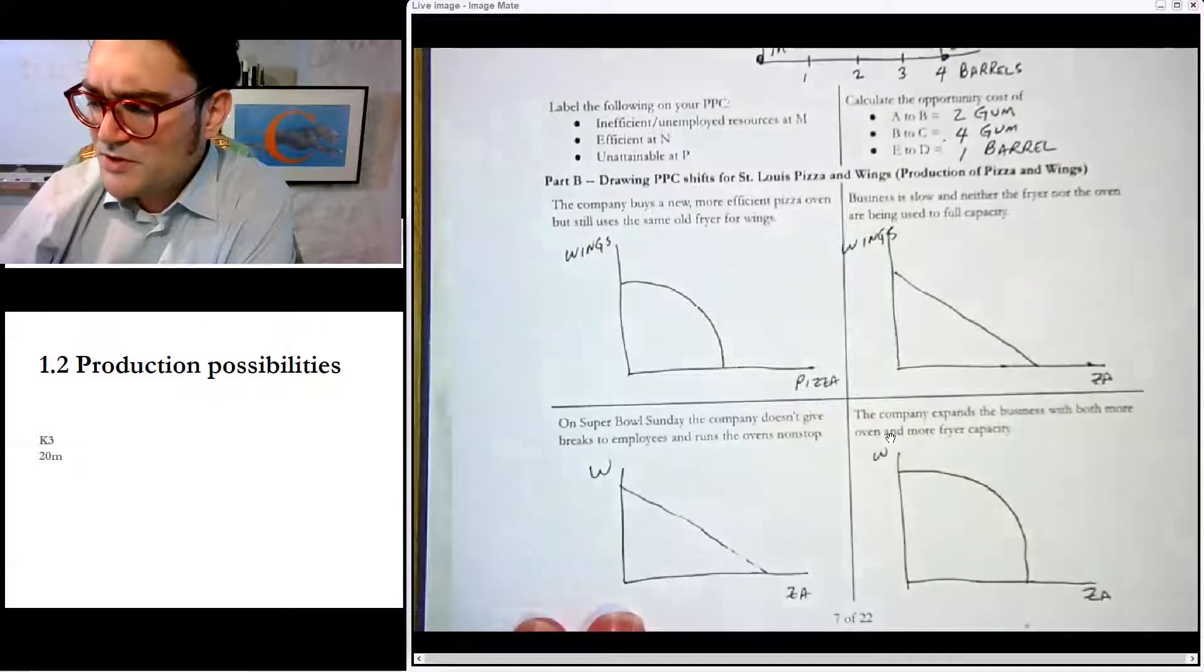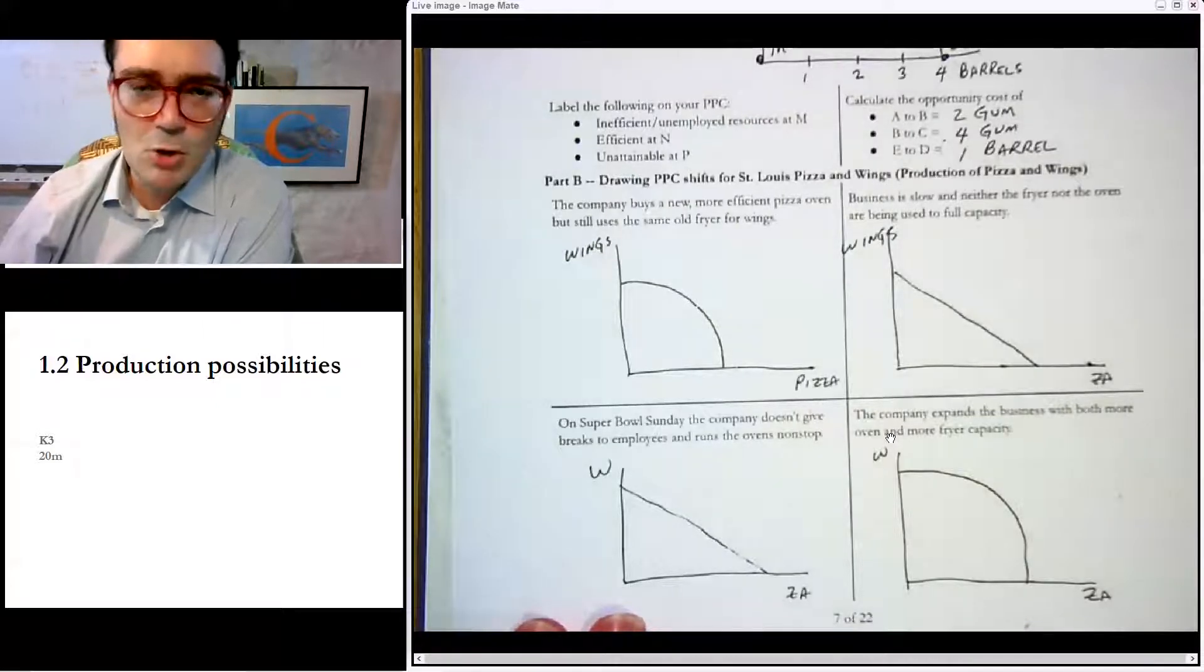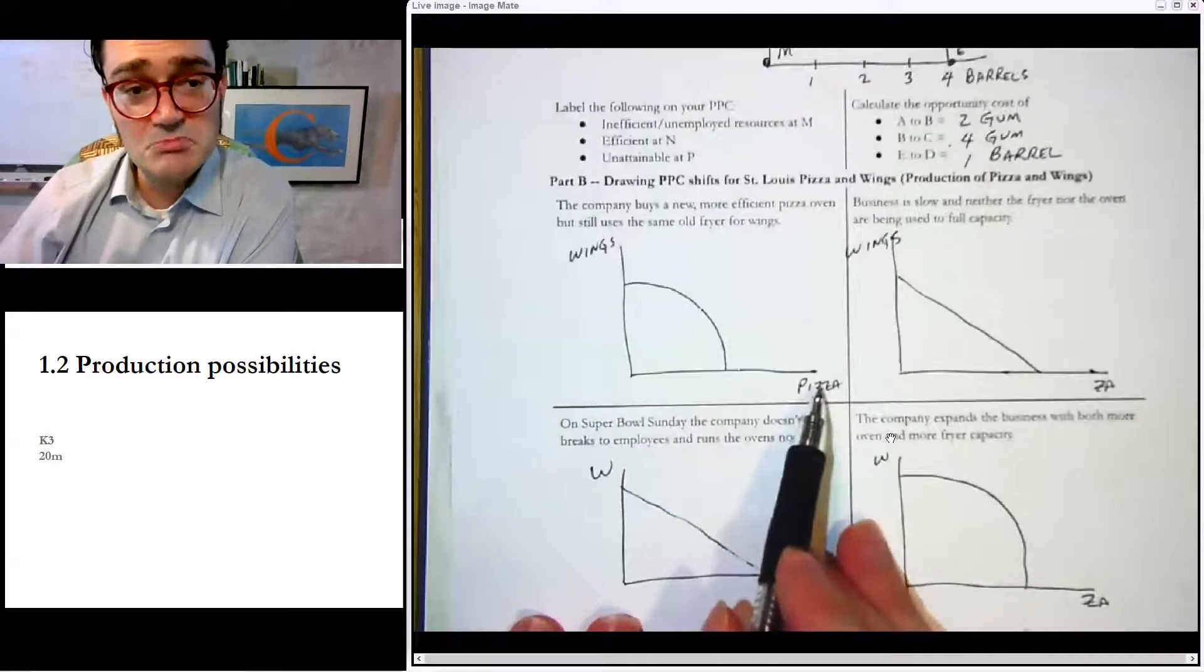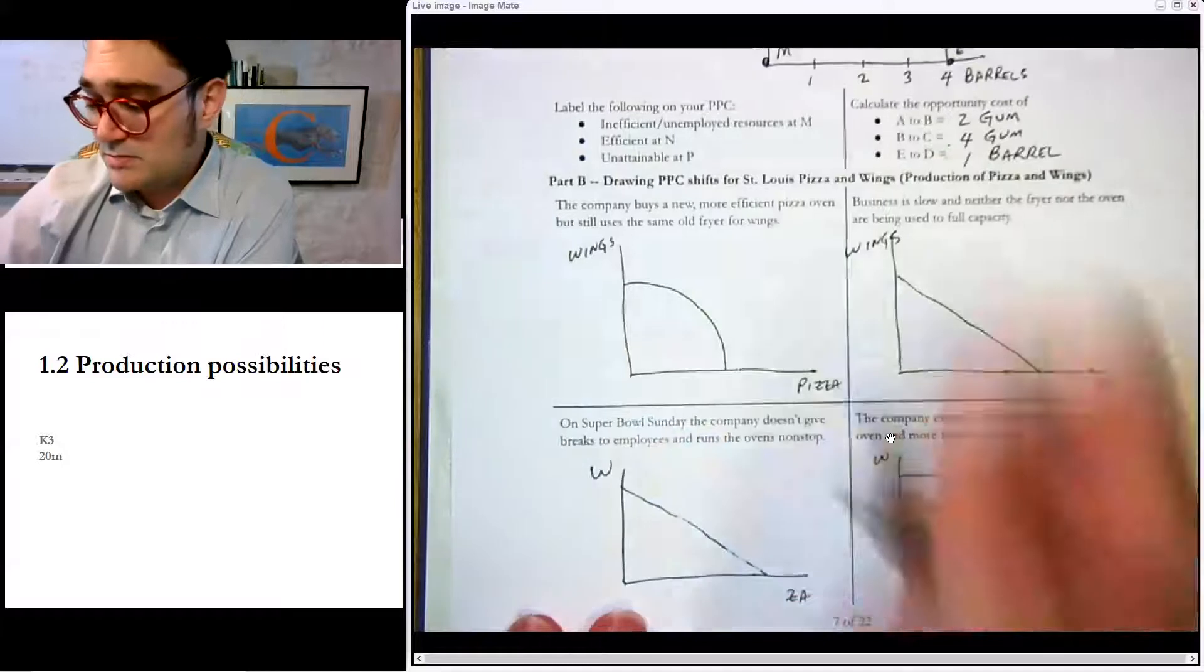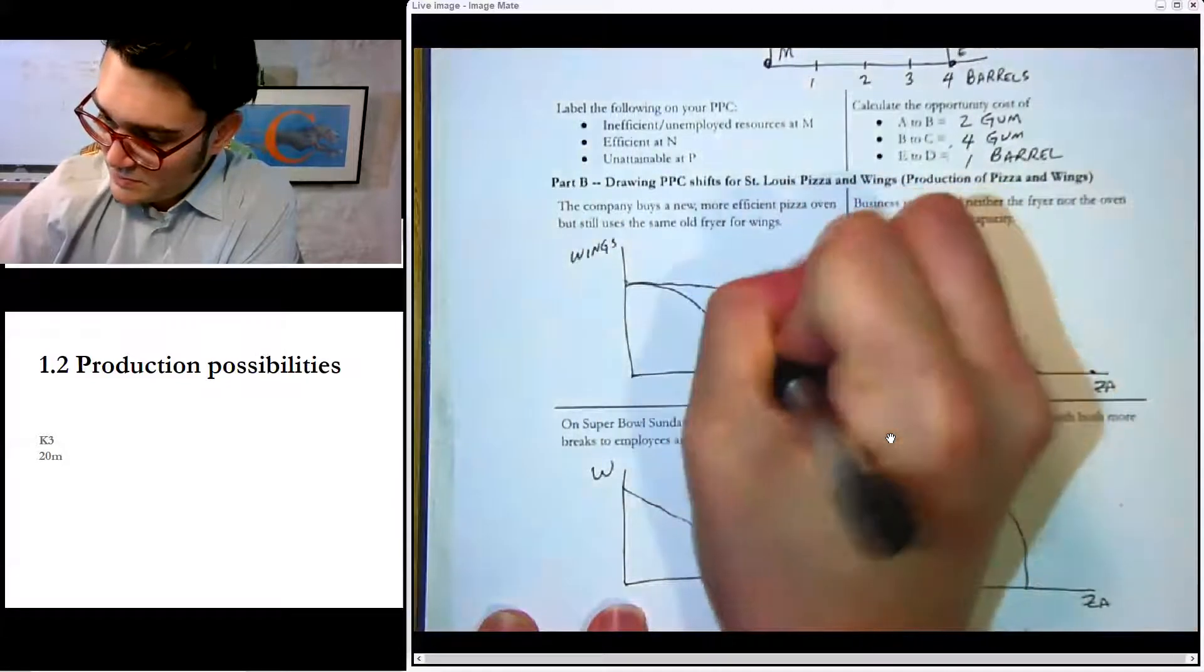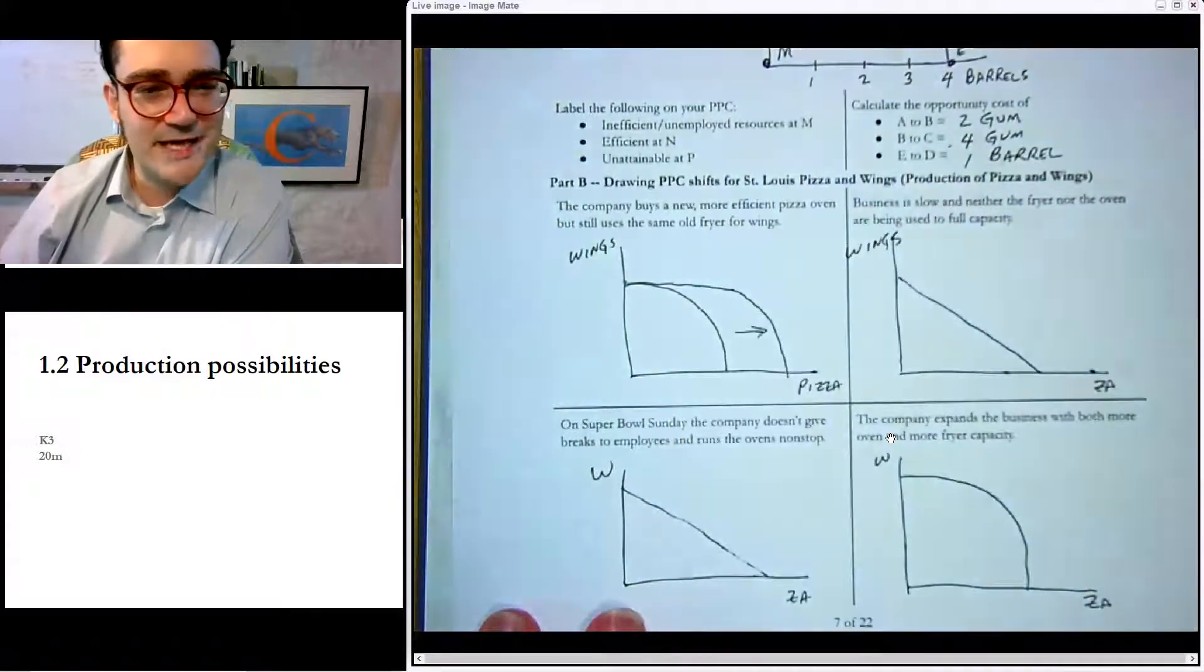Now, the company buys a new, more efficient pizza oven and still uses the same old fryer for wings. So in that one, that means that we're going to get better at making pizza, but the wings thing is going to stay the same. So we just shift this curve kind of out. We go, ta-da, just like that.